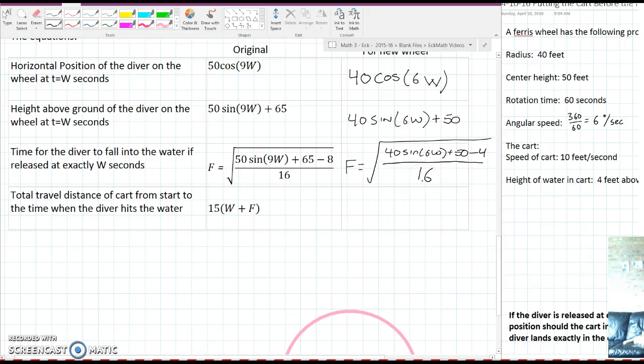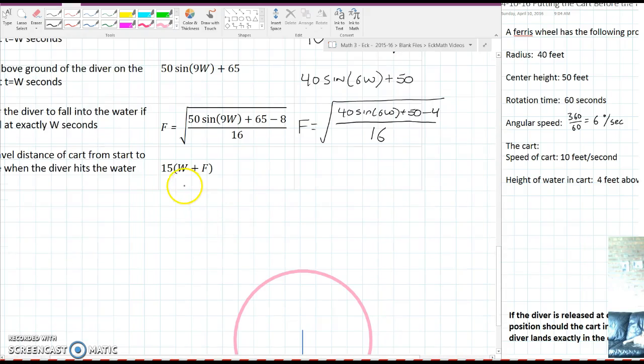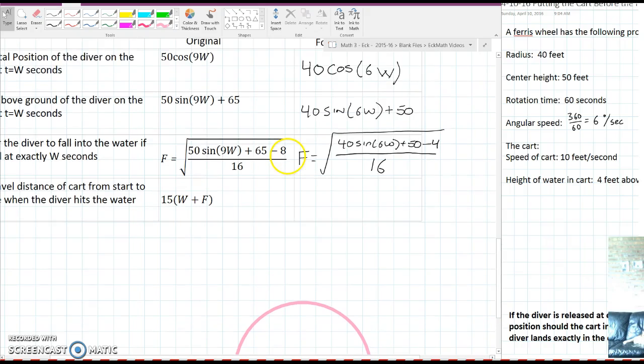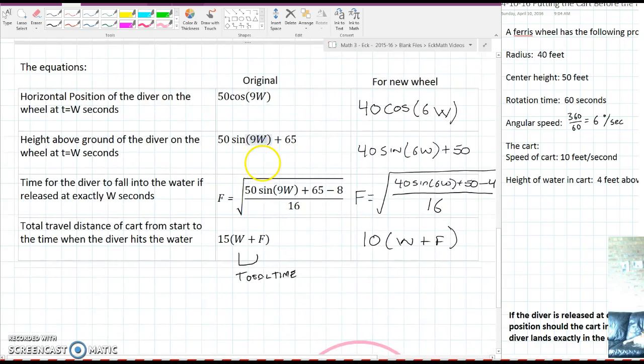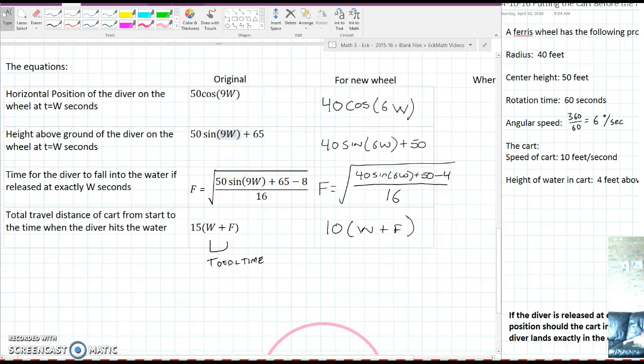We also have the equation for the total distance of the cart traveled from the start to when the diver hit the water. That was just 15 times the total time of the experiment which was w plus f. Well the only thing that's changed here is the speed of the cart. So it's going to be 10 times w plus f. So these are all the equations that we have to govern this new story.